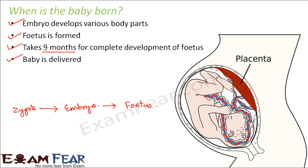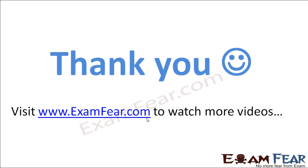Finally, the baby comes out through the vaginal opening. You might wonder how such a large baby can come through such a small opening — that is possible due to the contraction and expansion of the walls of the uterus. Because the uterus has muscular walls, these muscles contract and expand, pushing the baby outward until it comes out through the vagina.